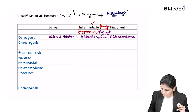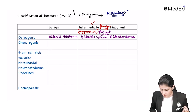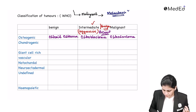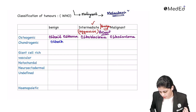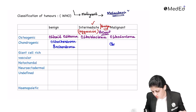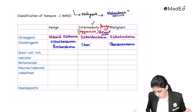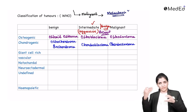Coming to chondrogenic — cartilage-forming tumors. The benign chondrogenic tumors are osteochondroma and enchondroma. The malignant variety is chondrosarcoma. The intermediate aggressive variety is chondroblastoma.